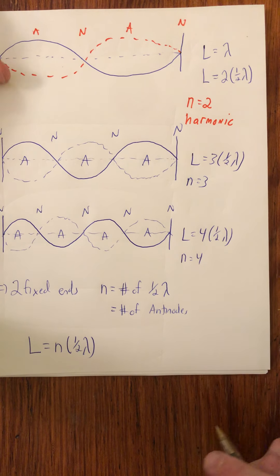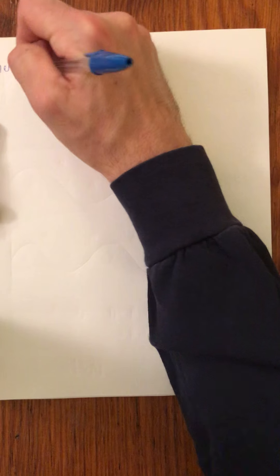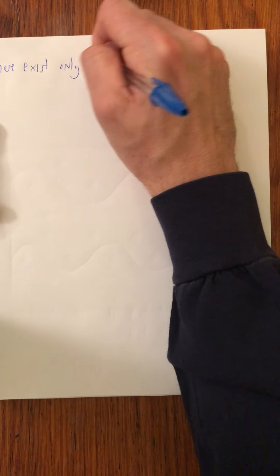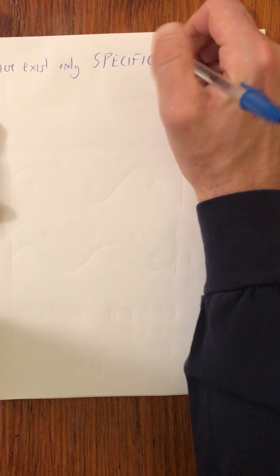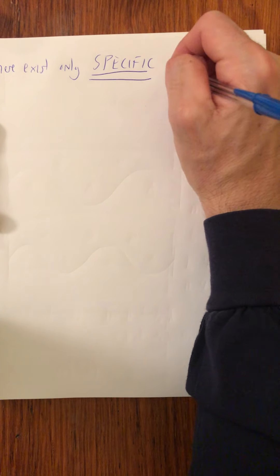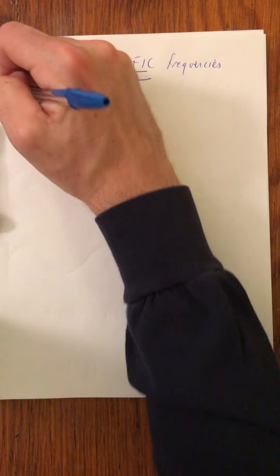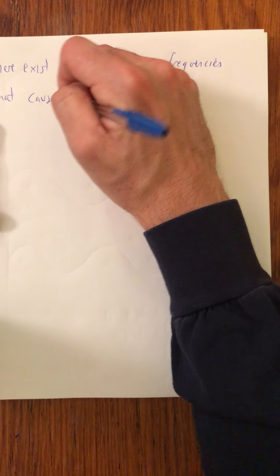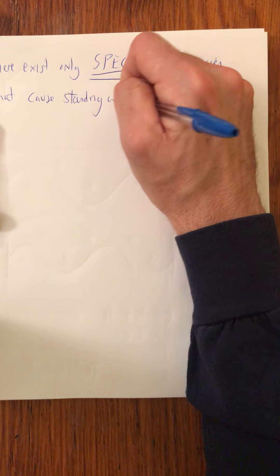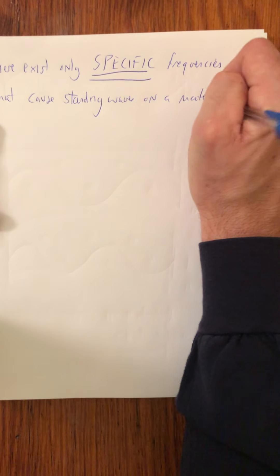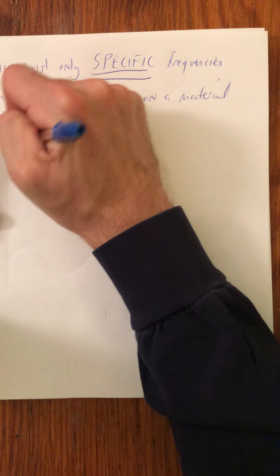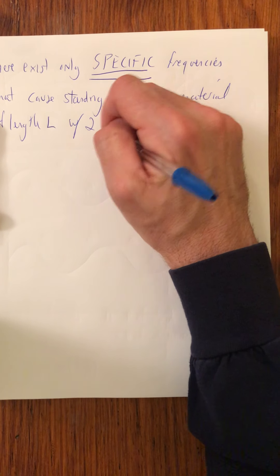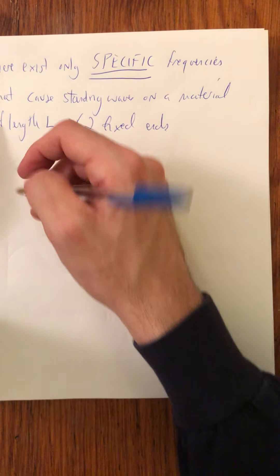So the question then is, what frequencies generate these standing waves? So therefore, there exist only specific... that's going to become an important word for the last vocabulary word I'm about to define here. Frequencies that cause standing waves on a material of length L with two fixed ends. So what are those frequencies? Well...